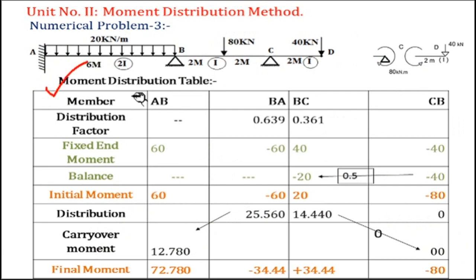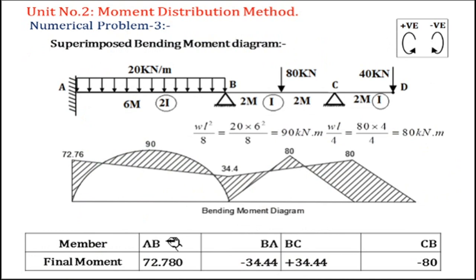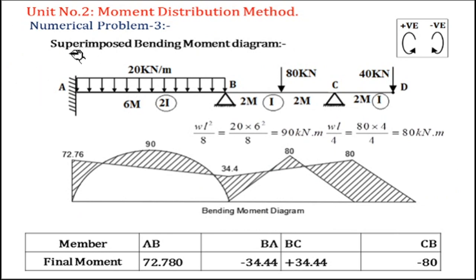Then we went through the moment distribution table, and finally we have the final end moments. Now let's start with the remaining part. We are going for the superimposed bending moment diagram. In the superimposed bending moment diagram, there are two moments you have to superimpose: one is the free bending moment, and the second is the final end moment.